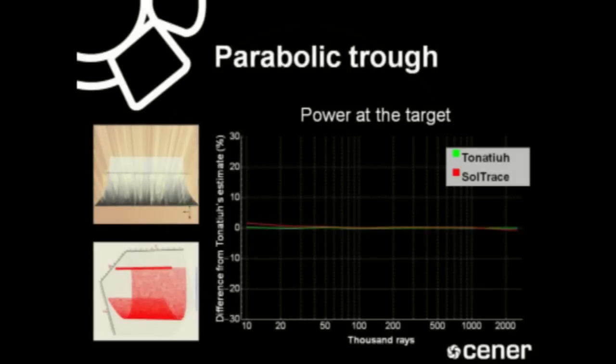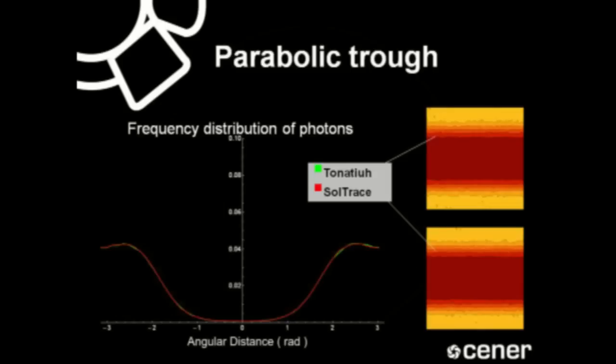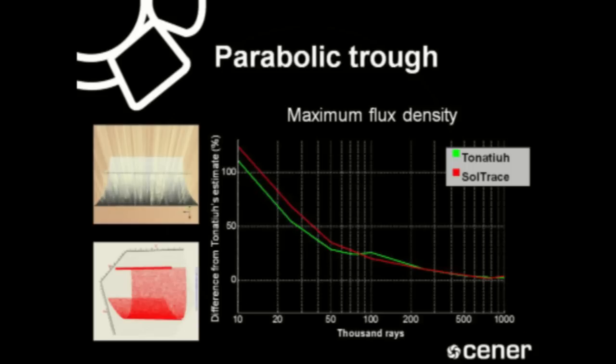In the case of the parabolic trough, the differences in power at the target estimates of Tonatiuh and SolTrace were negligible once the number of photons cast reached 20,000, which is a relatively low number for a Monte Carlo simulation. Regarding the frequency distribution of photons, the estimates produced by both programs were almost identical once the number of photons cast reached 2,000,000, as shown in the graph.